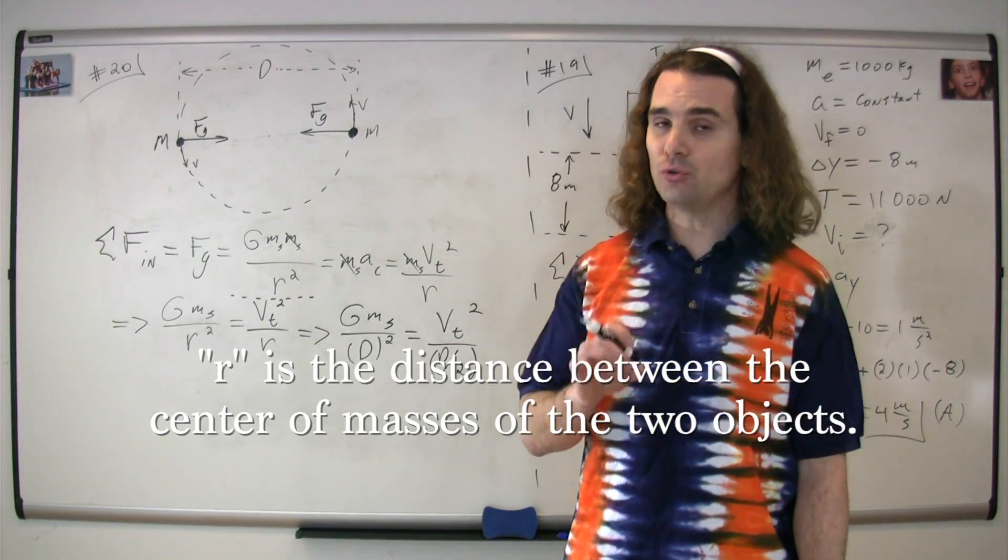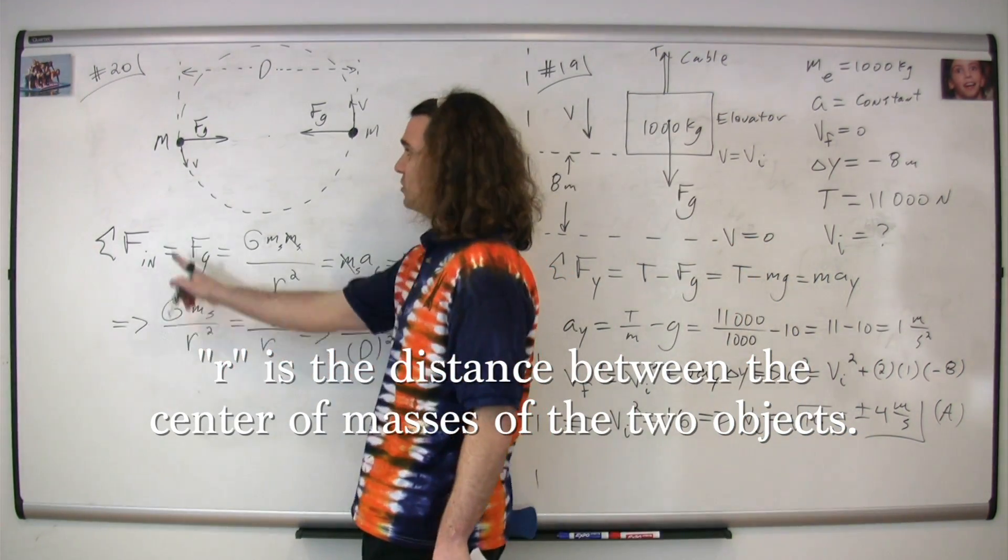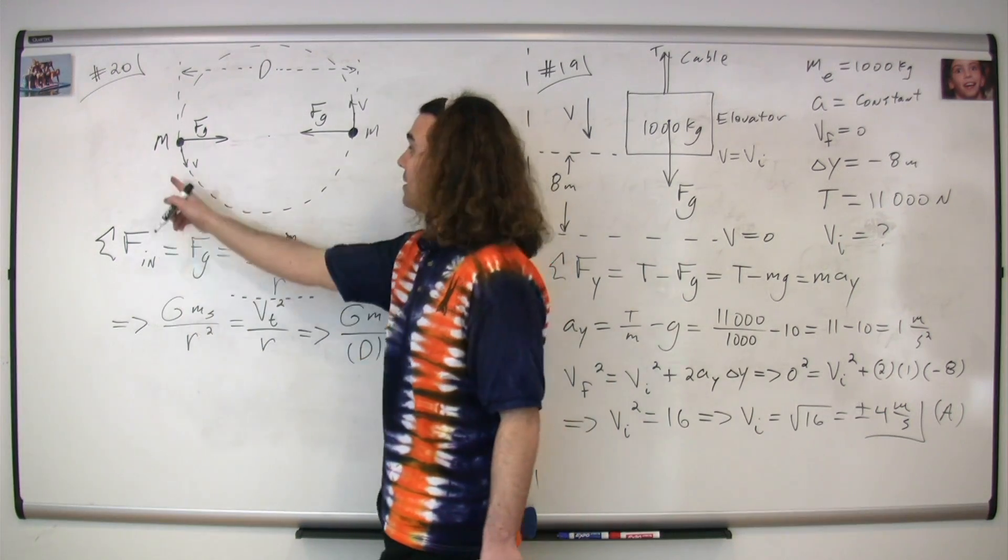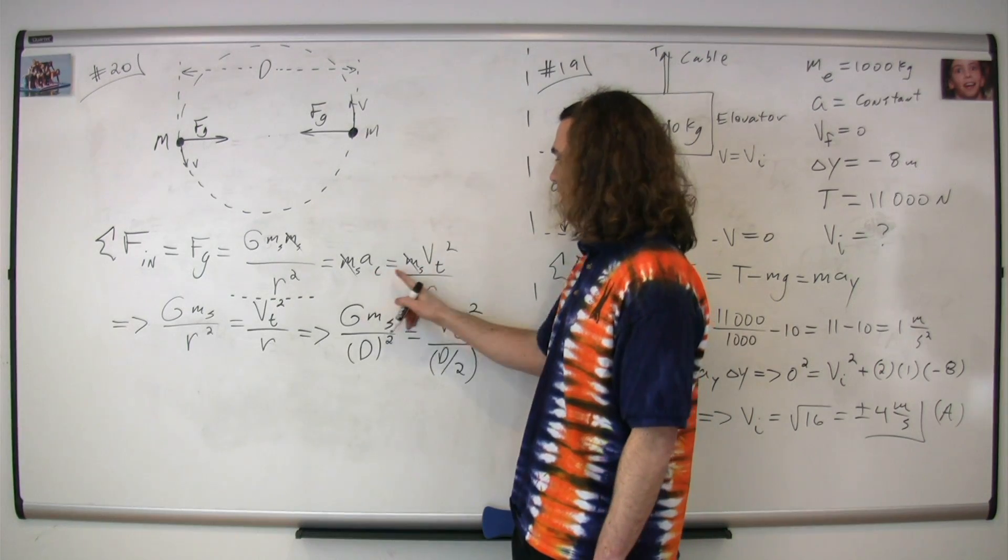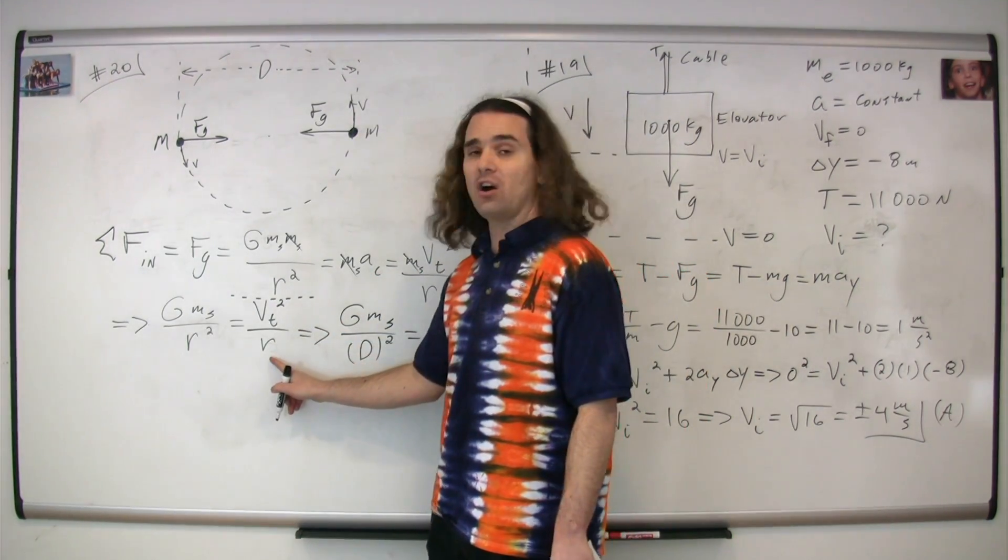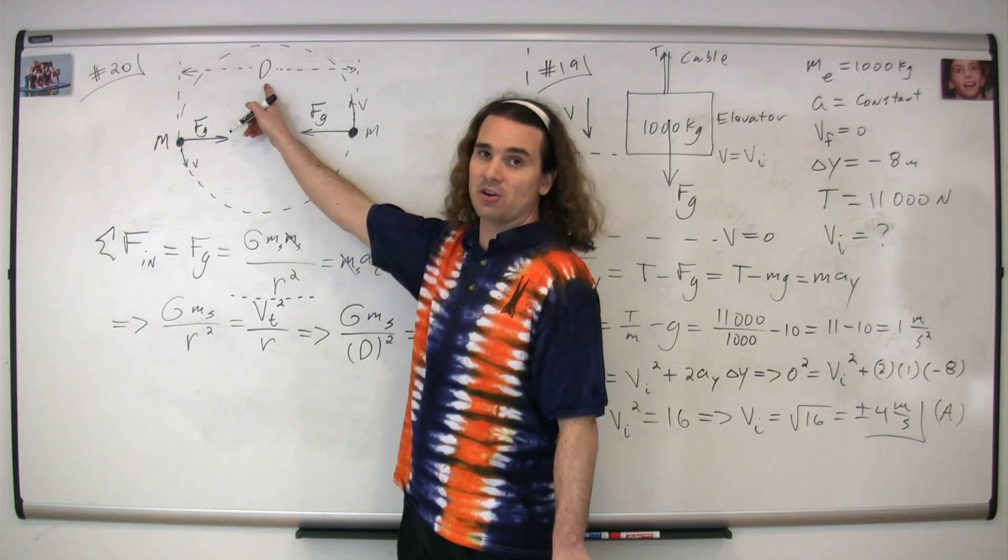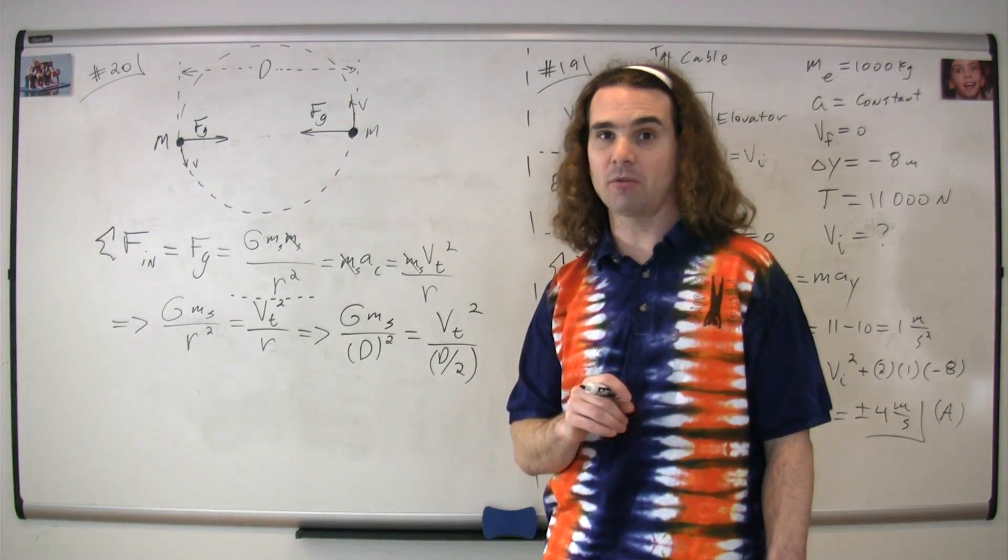This is especially confusing because r sometimes is the radius. So you have to be careful: in Newton's universal law of gravitation, r is the distance between the center of masses. In this particular problem, that r value is capital D. However, in your centripetal acceleration equation, r is the radius of the circle, which in this case is D divided by 2. They are not the same in this problem.